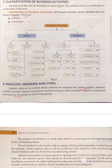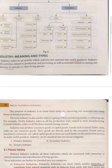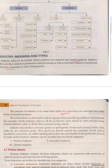The purpose of industry is to create form utility. The purpose of production is the use of raw materials — we convert raw materials into finished goods. So we can say that conversion is the main purpose of utility.